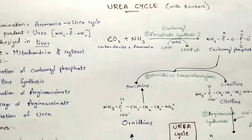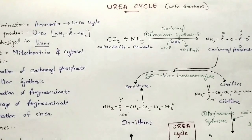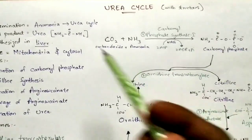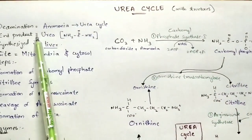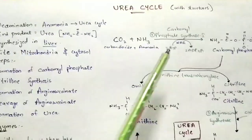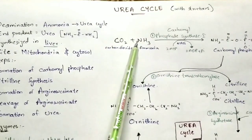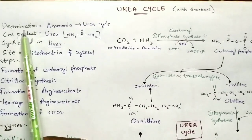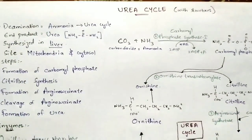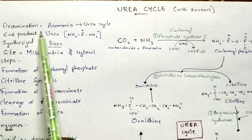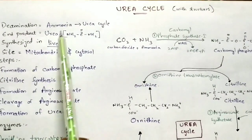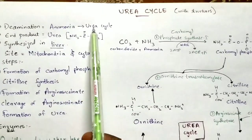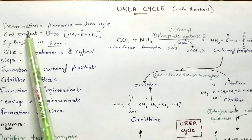In this video let us discuss about the urea cycle with structures. The urea cycle begins with ammonia. This ammonia is released by the process of deamination — the removal of the amino group from an amino acid — and that ammonia group is liberated out as ammonia, which is then used in the urea cycle.